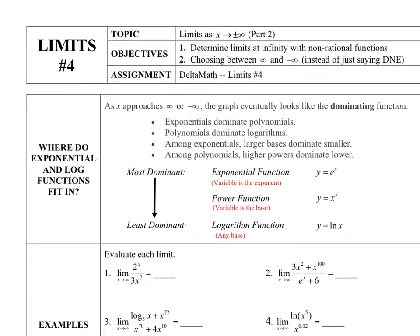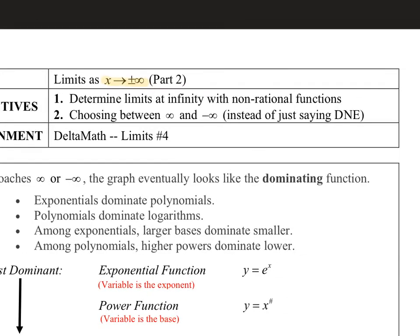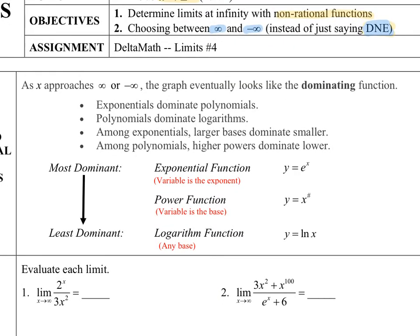In this section, we're going to continue our discussion about limits as x approaches infinity or negative infinity. In limits number three, we focused on rational functions, and in this section we're going to talk about non-rational functions. We're also going to look at non-existent limits — those 'does not exist' answers — and we're going to be more specific with them, saying whether that limit is approaching infinity or negative infinity. DNE is just the catch-all for both situations. Let's look at how some other types of functions fall into the domination rules from limits number three.